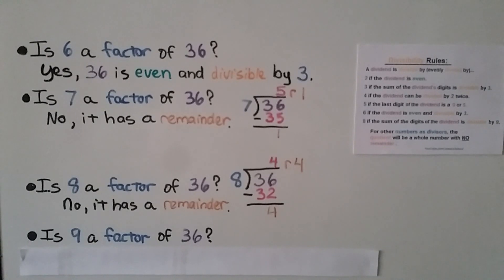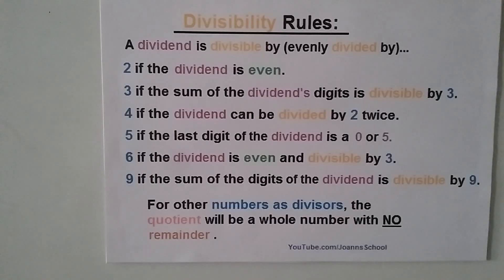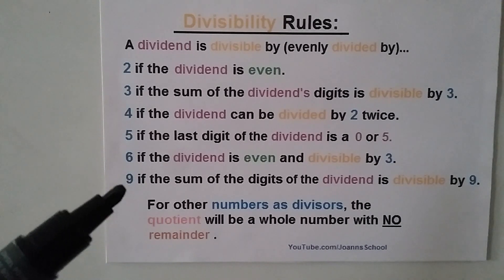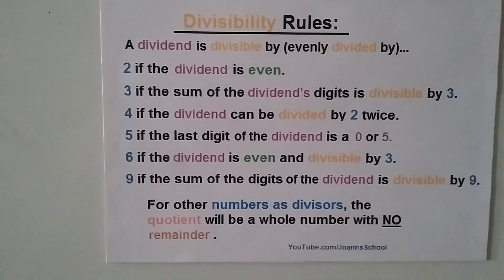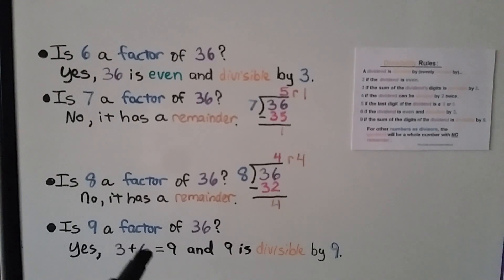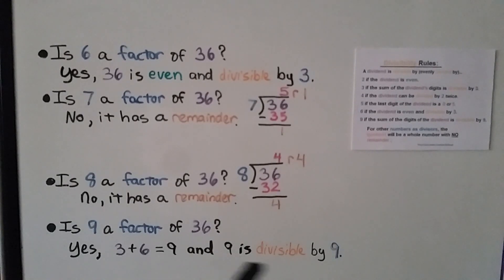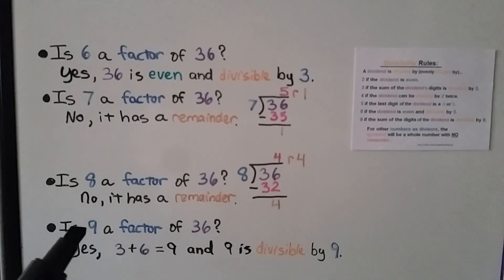Is 9 a factor of 36? The divisibility rule for 9 says if the sum of the digits is divisible by 9, then it is. The sum of the digits is 3 plus 6 equals 9. Is 9 divisible by 9? Yes — 9 divided by 9 is 1. So 9 is a factor of 36. And if you have your multiplication facts memorized, you'd know 9 times 4 is 36 and recognize it right away.